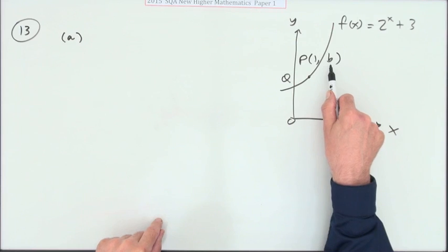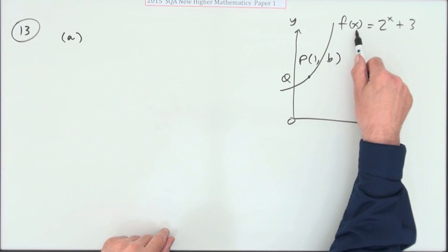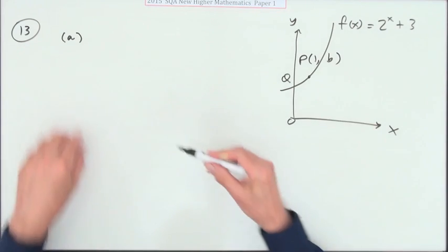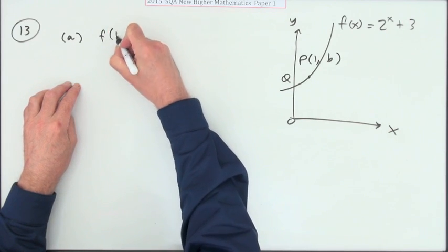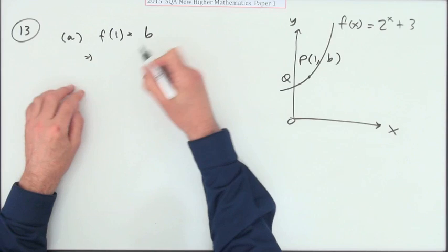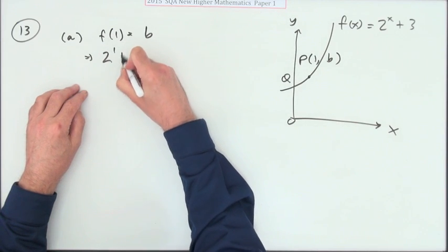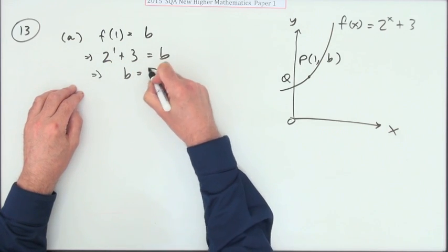What's the value of b, that's the y coordinate? Well that just means it should fit that equation. If you put 1 in for x, this thing should come out to be b. So straight away I've got f of 1 should equal b, which means that 2 to the power 1 plus 3 equals b, which means b equals 5.